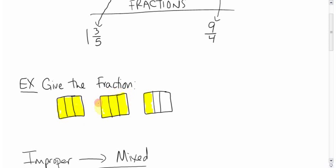Two of them are completely filled in. So we have two completely filled in boxes. So that's shown as the whole number, two. Two whole boxes filled in.